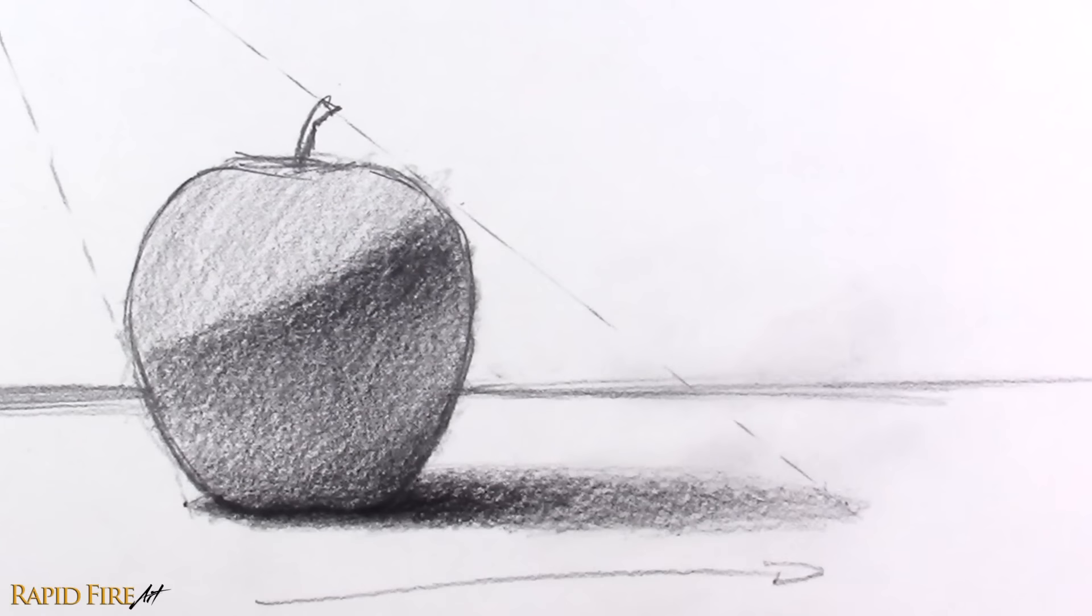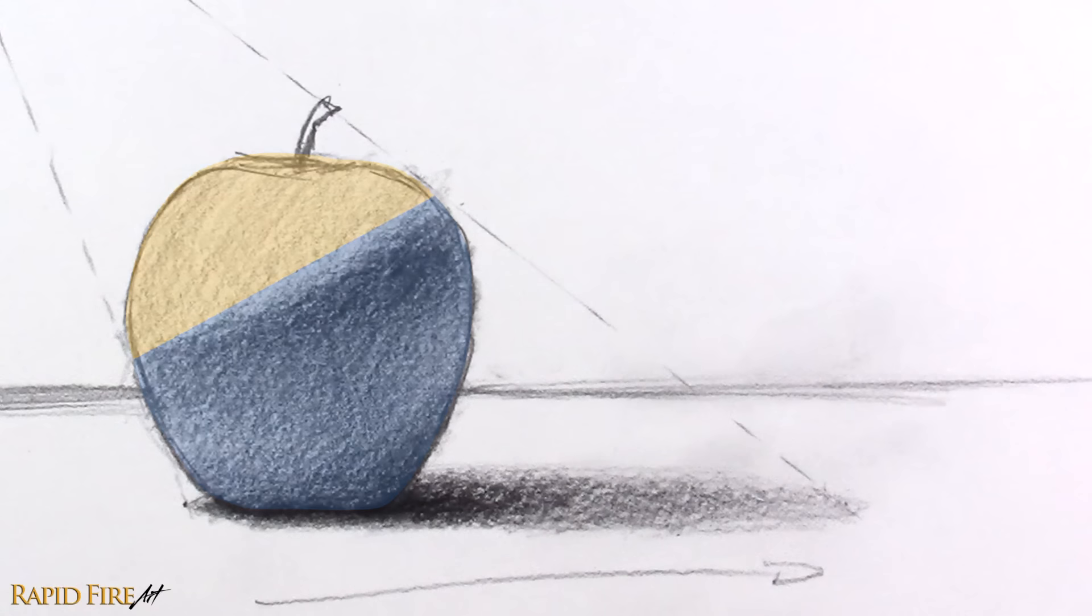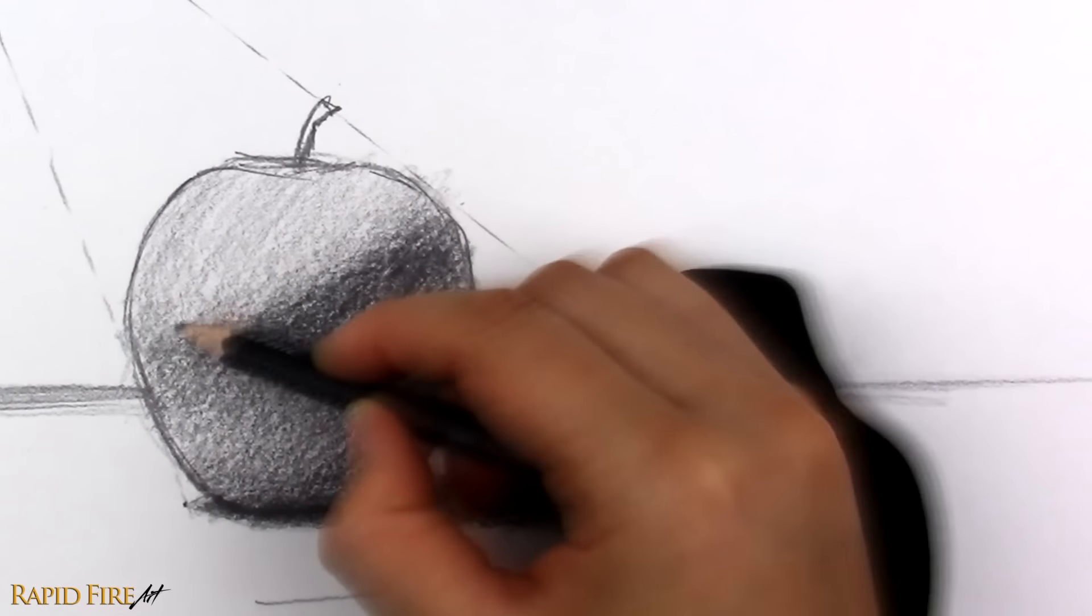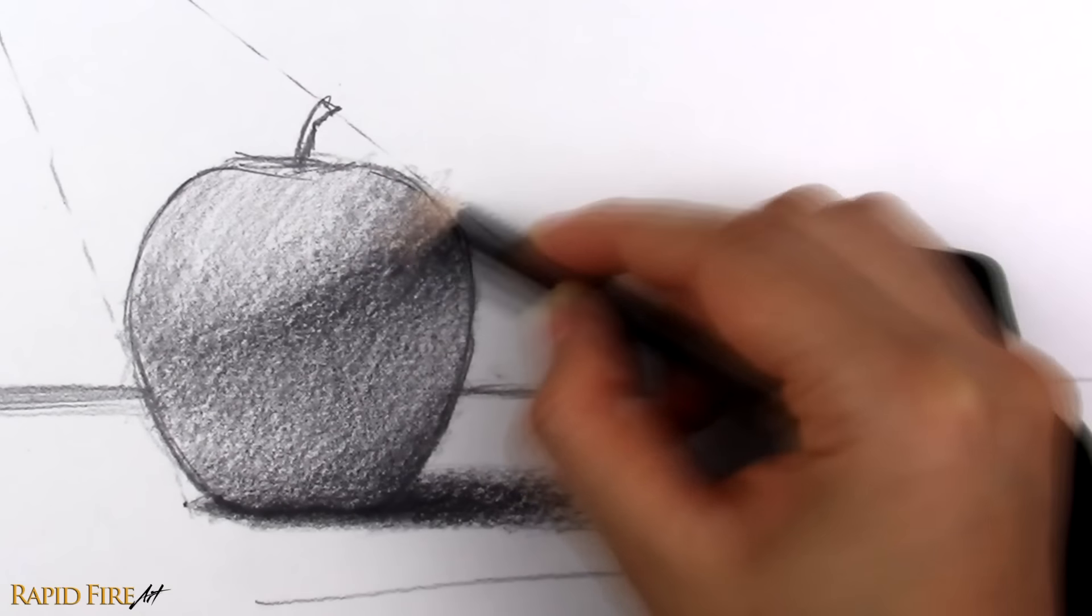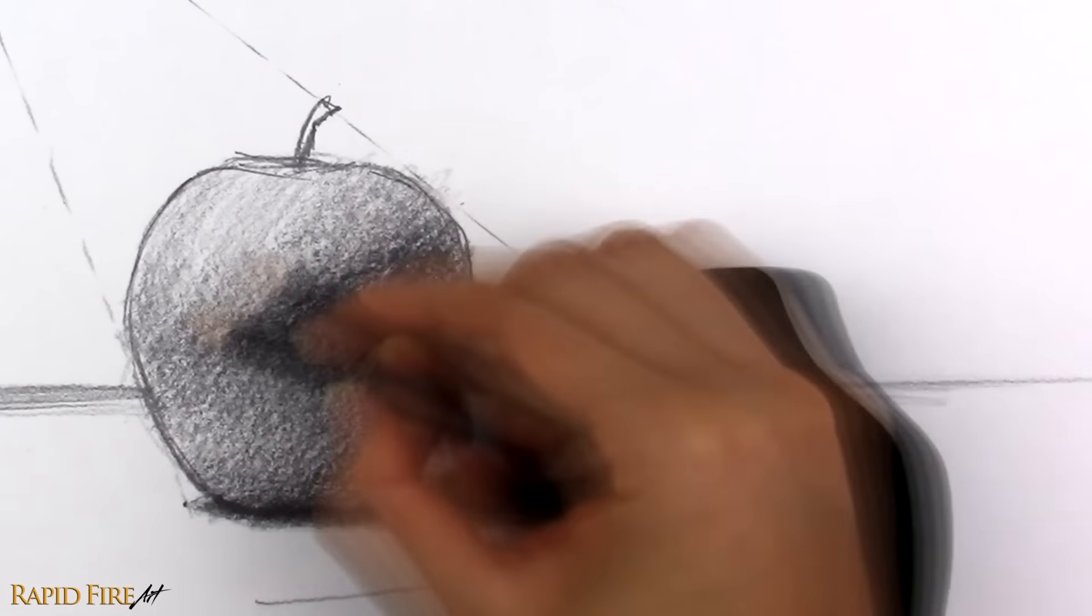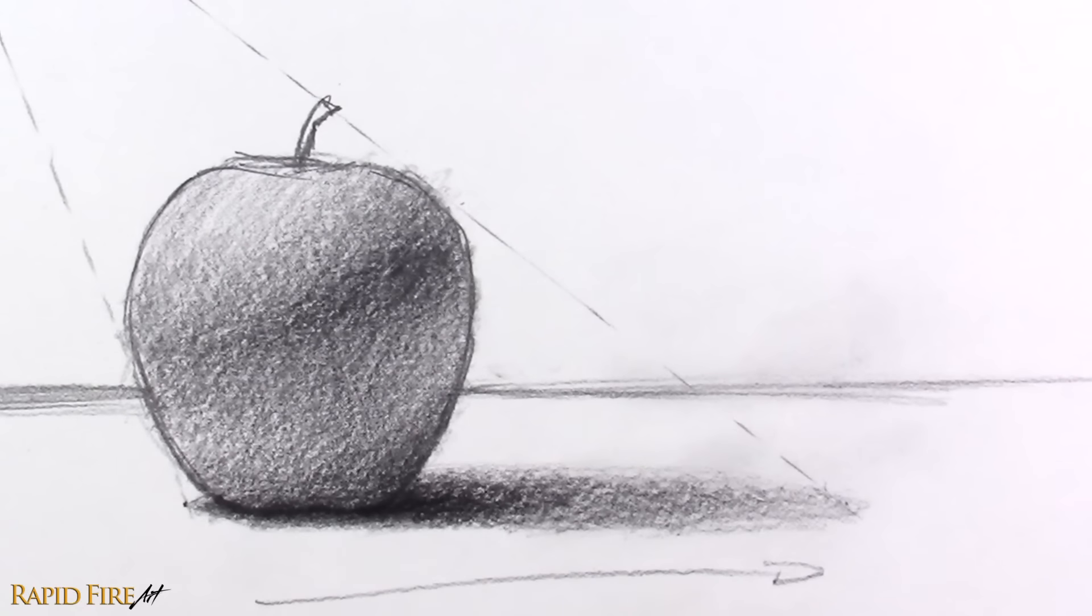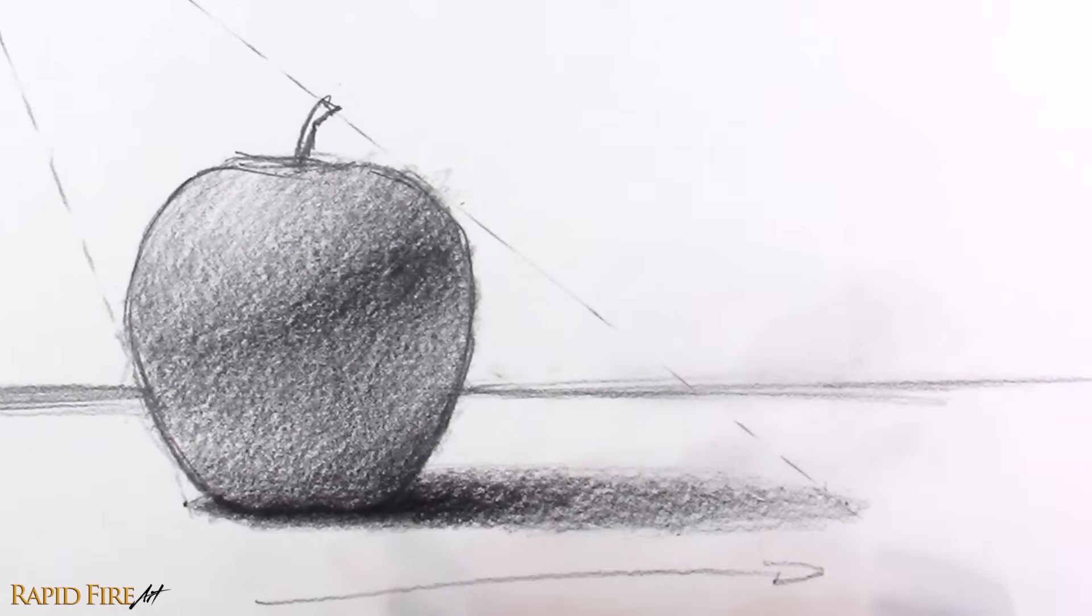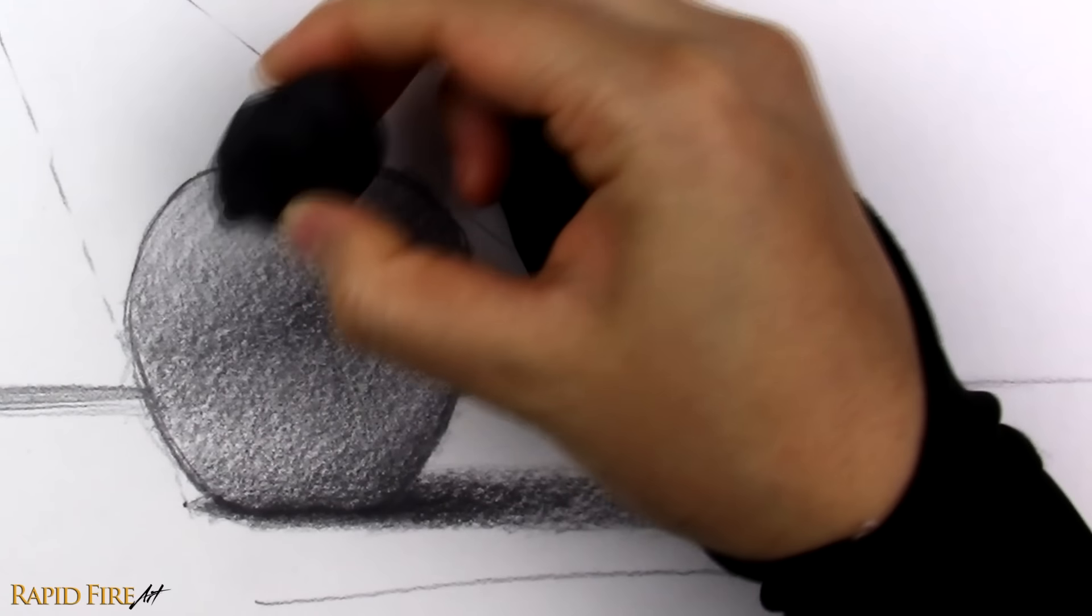The next thing we need to do is blend the two distinct sides of our apple, so it all comes together nicely. Where the form turns away from the direct light, add your midtones, which will immediately make the surface appear rounder. When you're done, use an eraser to indicate the highlight.